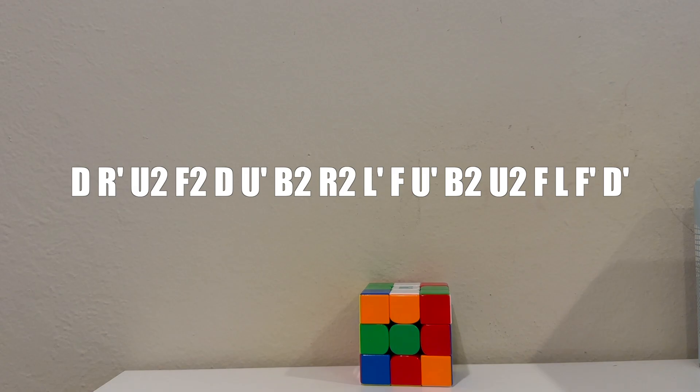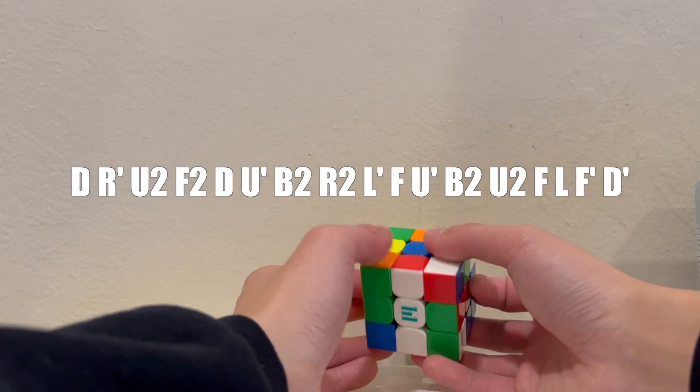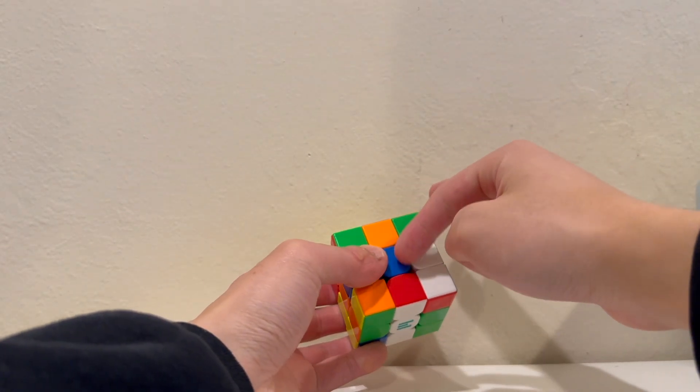You can pause the video to scramble your cube and follow along if you're interested. What he did was a white double x cross. He had yellow top and blue front.